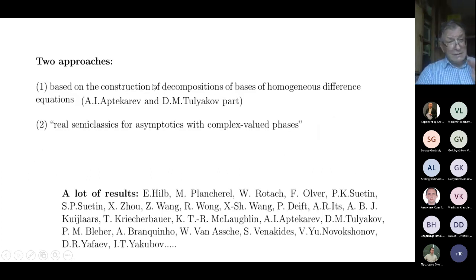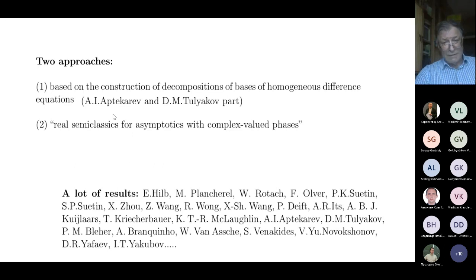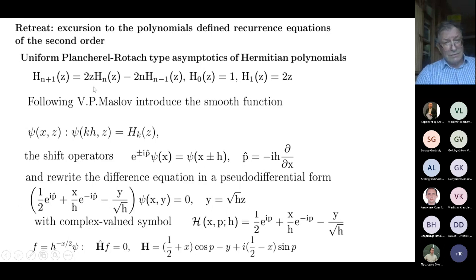There exist two approaches; one was developed by Aptekarif and Tulikov, but I will speak about the semi-classical asymptotics. There are many results concerning orthogonal polynomials, especially one-dimensional polynomials. I want to attract your attention to the famous paper by Plancherel-Rotach, and we will actually speak about this type of asymptotics and their generalization.